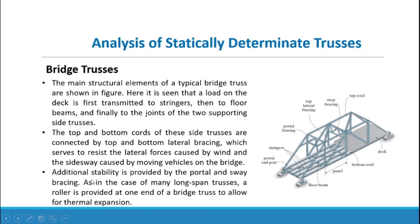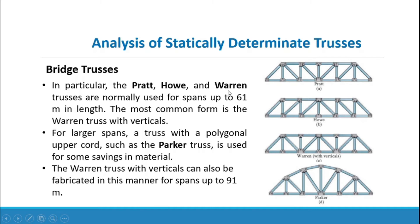Additional stability is provided by the portal and sway bracing. As in the case of many long-span trusses, a roller is provided at one end of a bridge truss to allow for thermal expansion. Bridge truss components include the top lateral bracing, sway brace, top cord, portal bracing, stringers, panel, bottom cord, deck, floor beam, and portal post. The Pratt, Howe, and Warren trusses are normally used for spans up to 61 meters in length, with the Warren truss with verticals being the most common form.